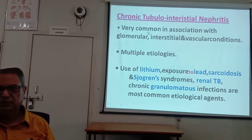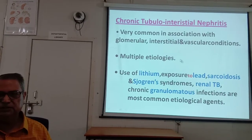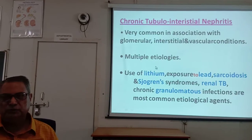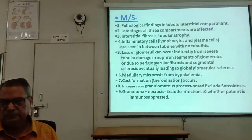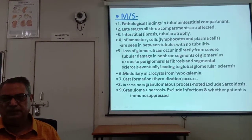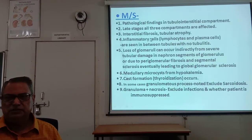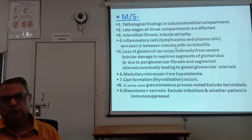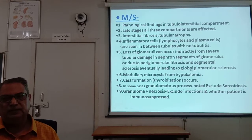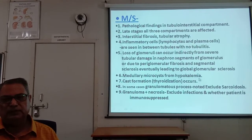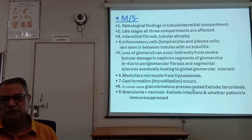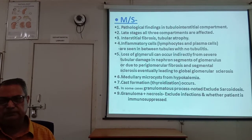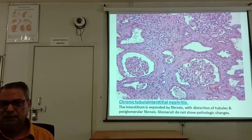Chronic tubulo-interstitial nephritis is very common in association with glomerular, interstitial, and vascular conditions. It has multiple etiologies including use of lithium, exposure to lead, sarcoidosis, Sjögren's syndrome, renal tuberculosis, and chronic granulomatous infections. Microscopically, the pathological findings in the tubulo-interstitial compartment include interstitial fibrosis, tubular atrophy, and chronic inflammatory infiltrate (lymphocytes, plasma cells, macrophages) between tubules without tubulitis. There is loss of glomeruli and periglomerular fibrosis. Medullary necrosis from hypokalemia and cast formation may occur. Granulomatous process indicates sarcoidosis; granuloma plus necrosis indicates infection; and immunosuppression status should be considered.